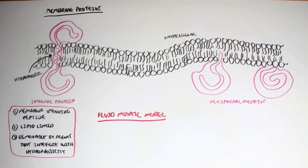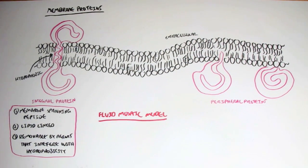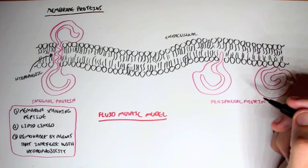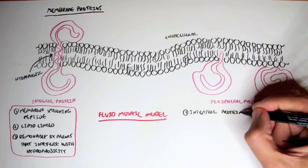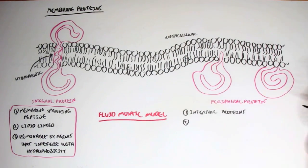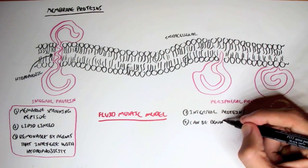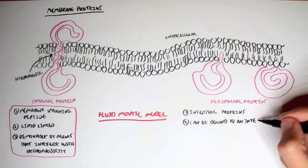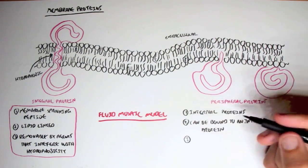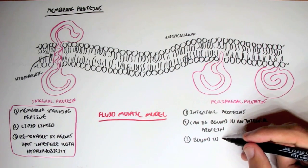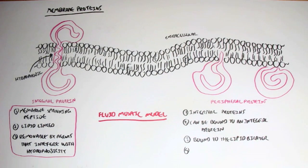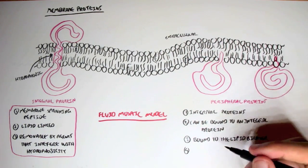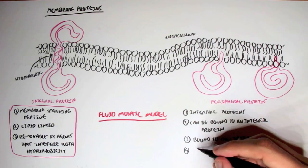Now let's look at peripheral proteins. Peripheral proteins are internal proteins located on the inner leaflet of the membrane. They can be bound to an integral protein, or they can be bound to a lipid membrane, or they can be lipid-linked.